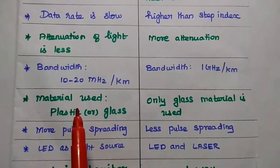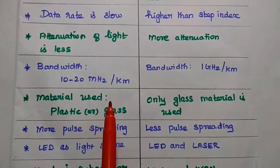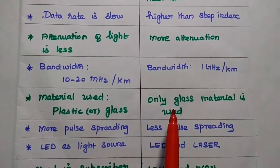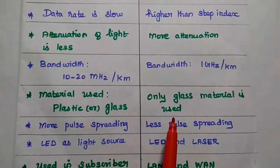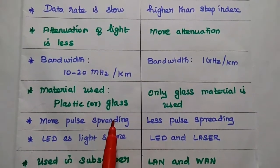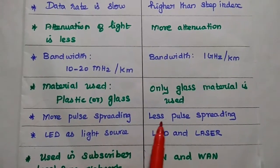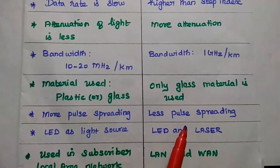The materials used for this step index can be either plastic or glass. But for this graded index, only glass material is used. This step index provides more pulse spreading, but here it provides less pulse spreading.